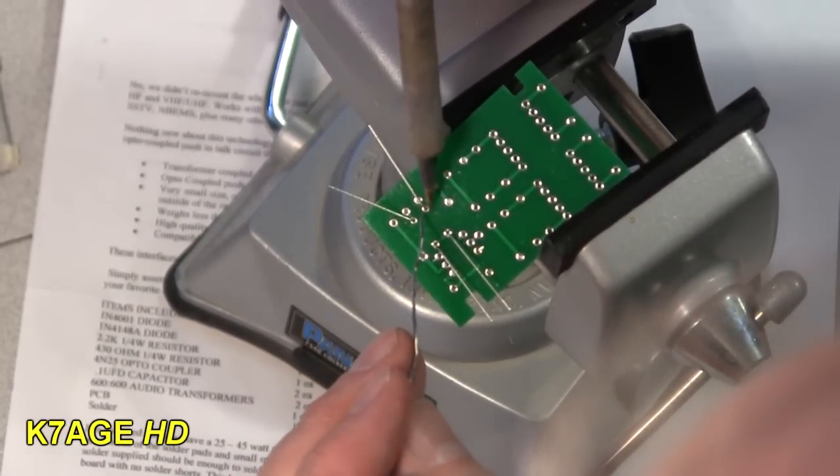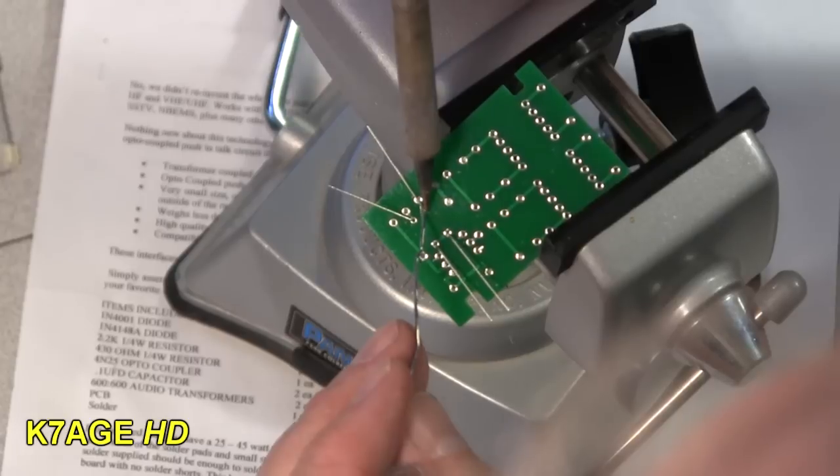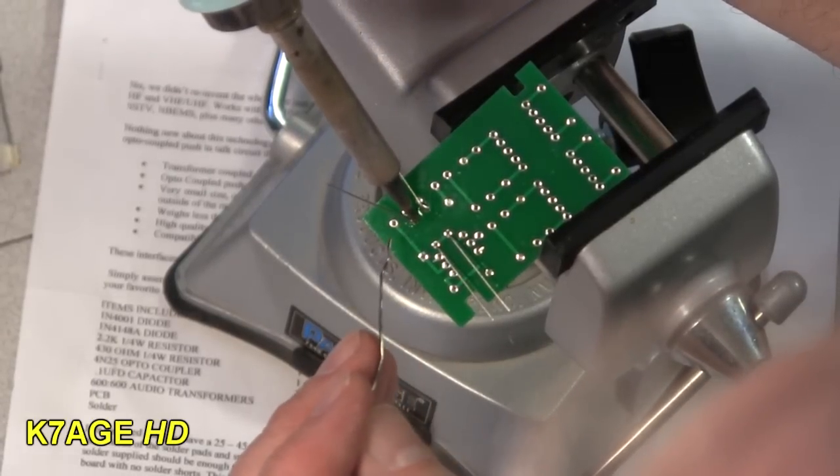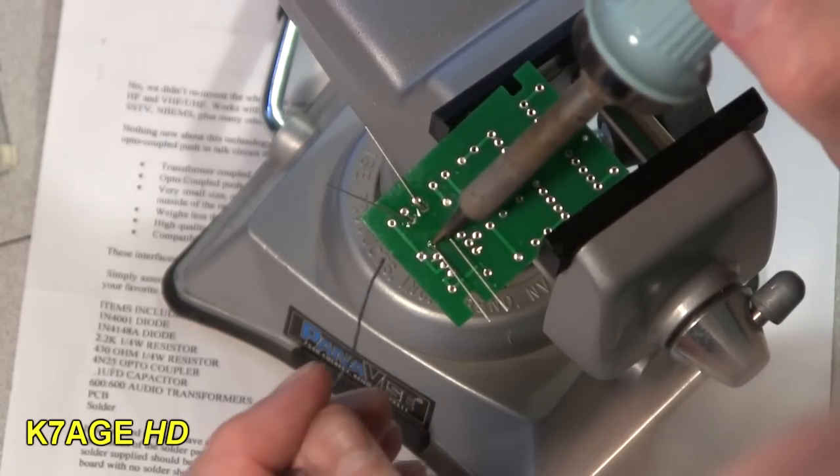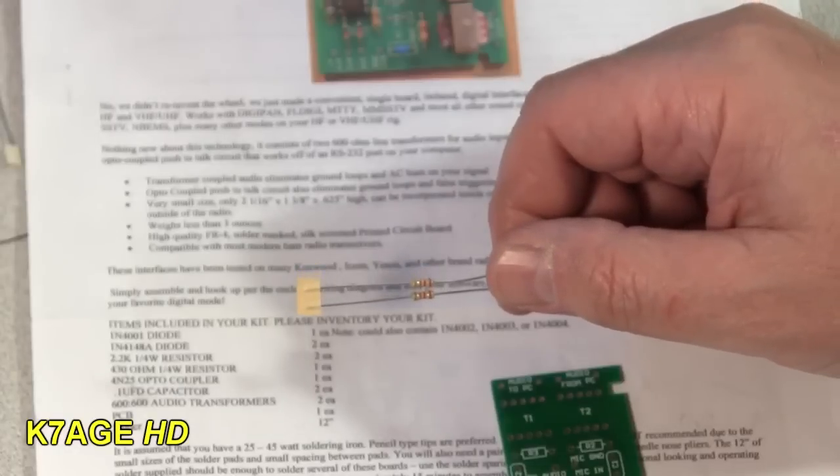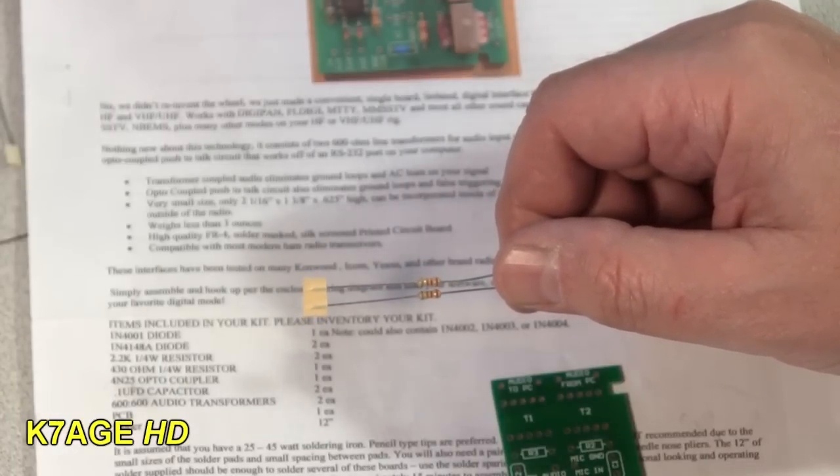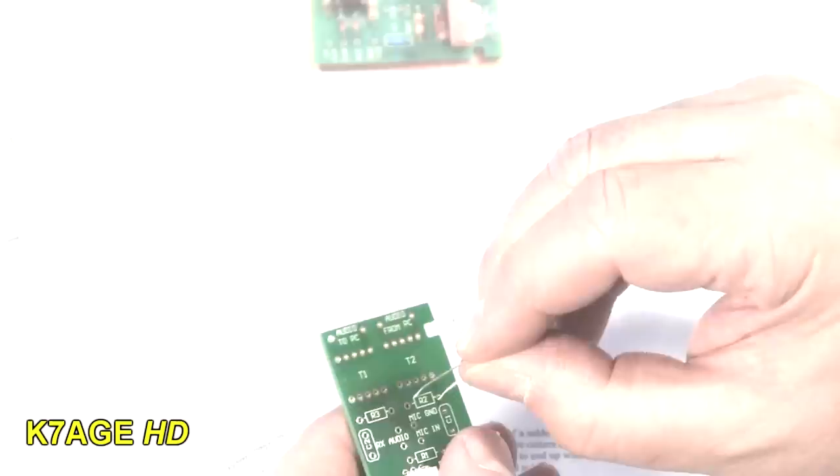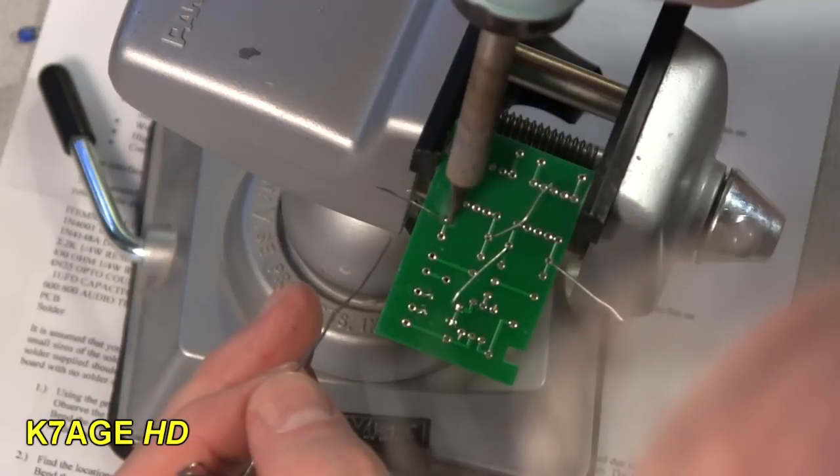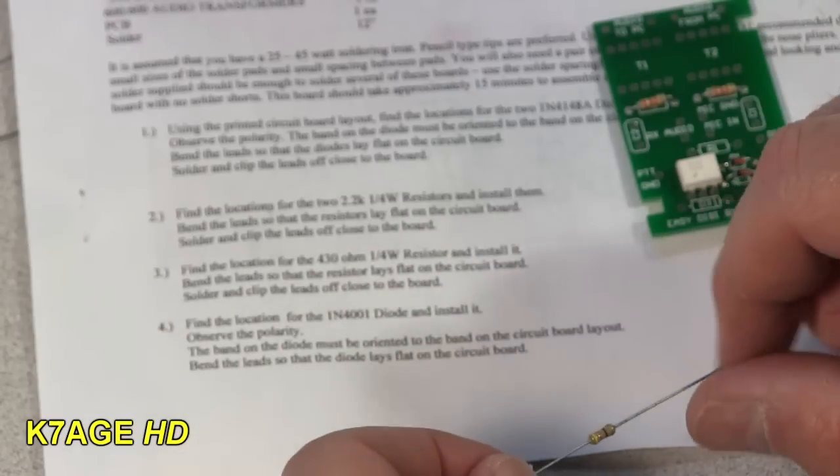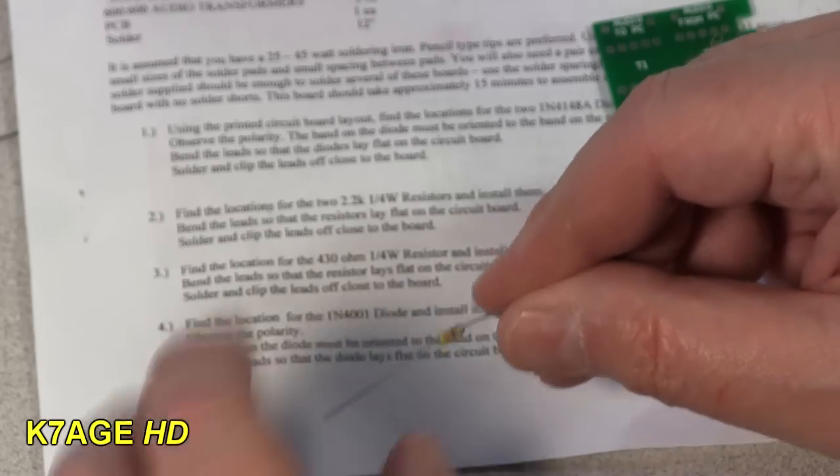I just kind of place the tip on the hole and the lead and put a little bit of solder. You'll see it turn silver and kind of wick up the lead a little bit. Just do those four and cut off the leads. The next step is to mount two 2.2k quarter watt resistors. I typically align them with the writing on the board, just a little bit of solder on the pad and the lead.